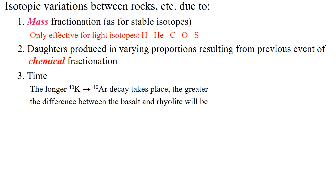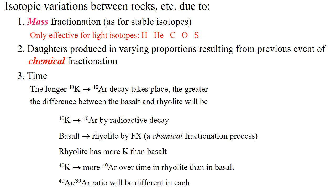The longer the radioactive isotope is allowed to decay, the lower the parent-daughter ratio or the higher the daughter-to-stable-isotope ratio should be. Looking at the potassium-40 to argon decay scheme, rhyolites have more potassium than basalts, so there will be more potassium-40 decaying into argon-40 over time in rhyolite. Therefore the ratio of argon-40 to argon-39, a stable isotope of argon, will be different for a basalt versus a rhyolite.